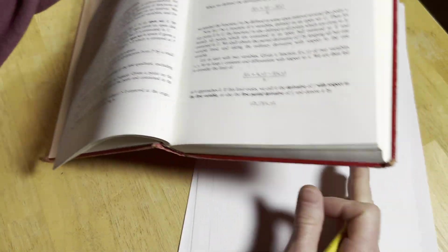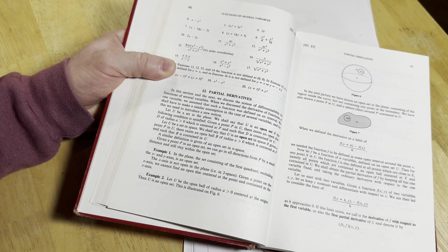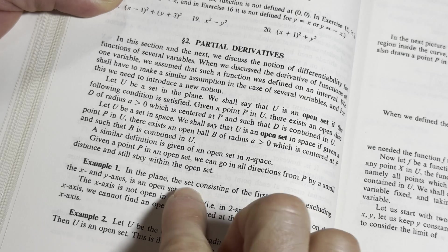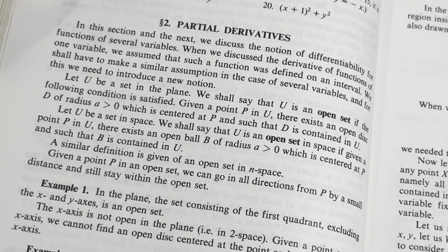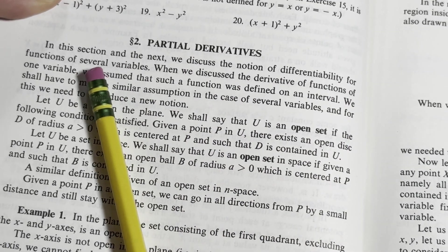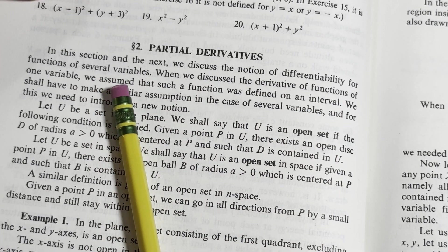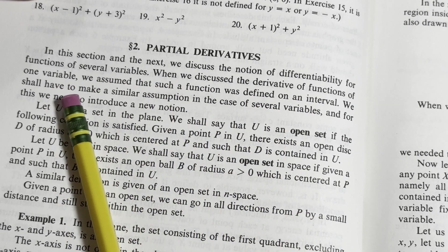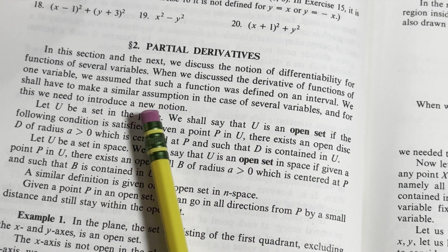It starts here with partial derivatives which we're not going to get into in this video. We're just going to go through the first example. In this section and the next we discuss the notion of differentiability for functions of several variables. When we discussed the derivative of functions of one variable we assumed that such a function was defined on an interval. We shall have to make a similar assumption in the case of several variables and for this we need to introduce a new notion.